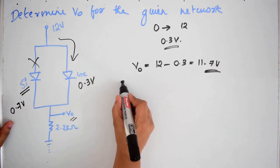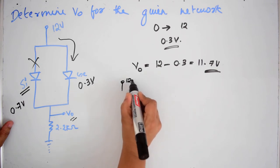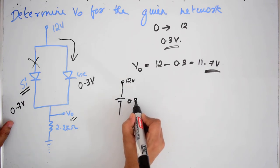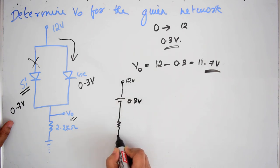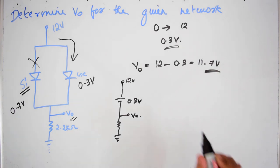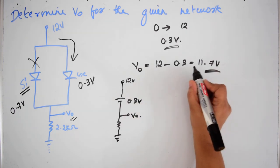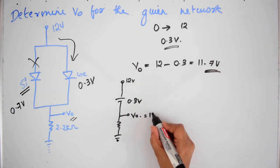So this will be like, here a 12 volt is coming, here a 0.3 volt, here a resistor and we have to find this V0. So this V0 will be 12 minus 0.3 that will be 11.7 volt.